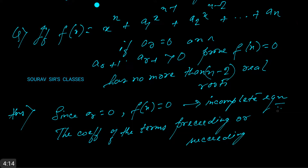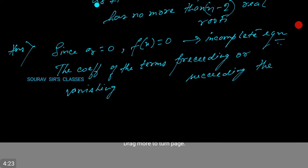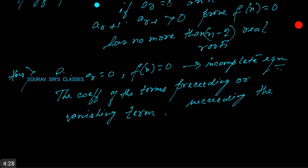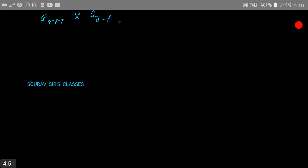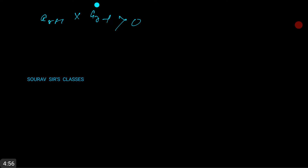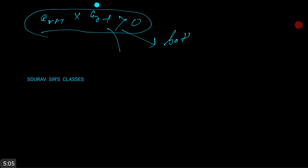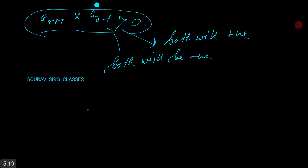The vanishing term — let's consider the terms aᵣ₋₁ and aᵣ₊₁ to satisfy the condition. We have aᵣ₊₁ times aᵣ₋₁ is greater than 0, which means both will be positive or both will be negative.